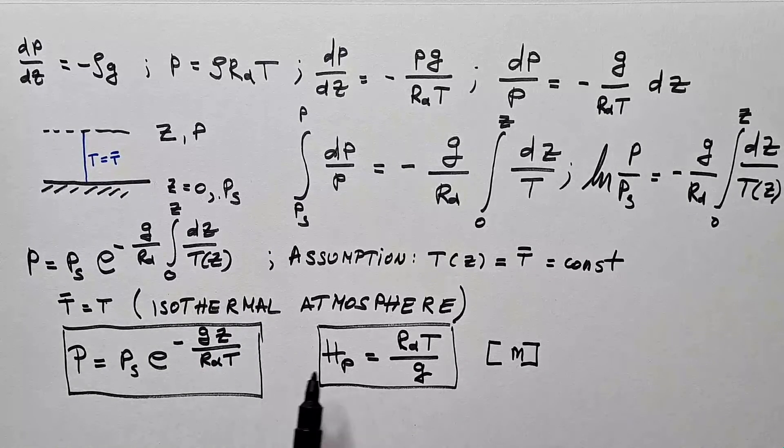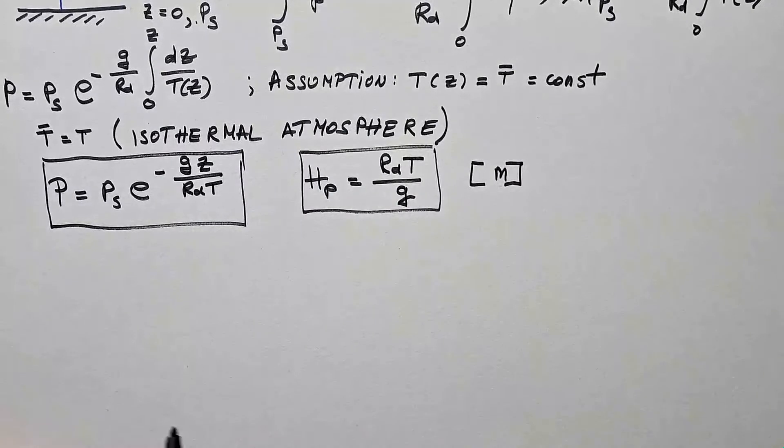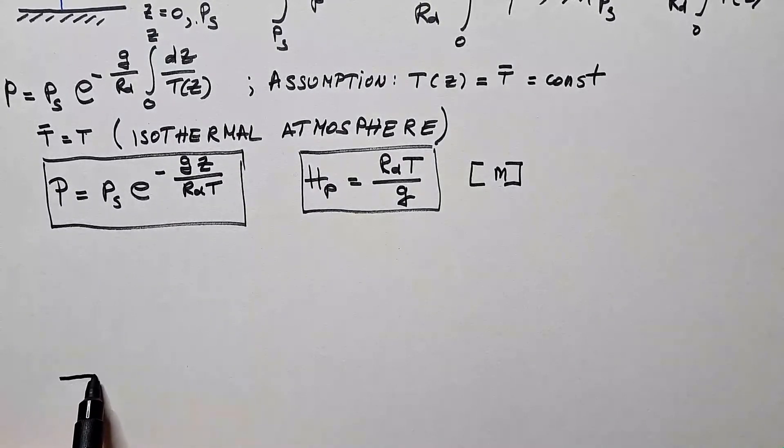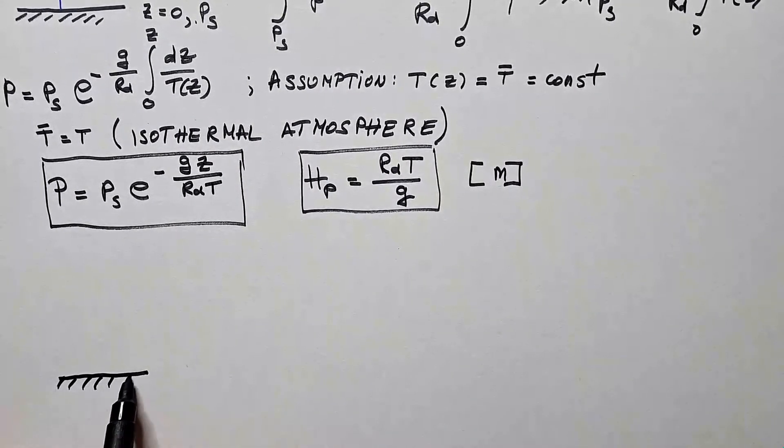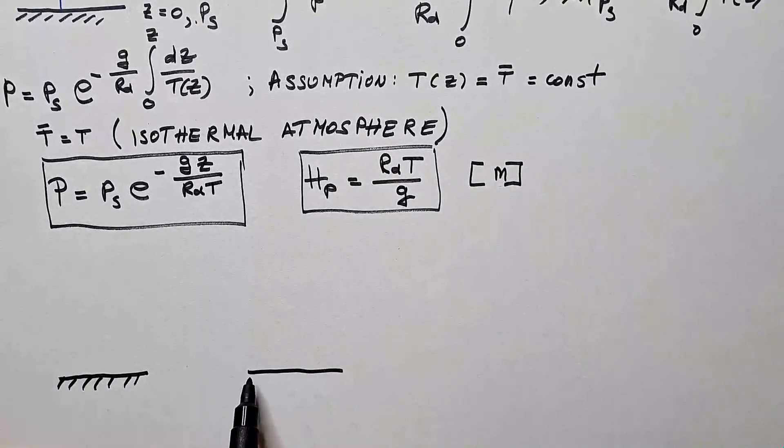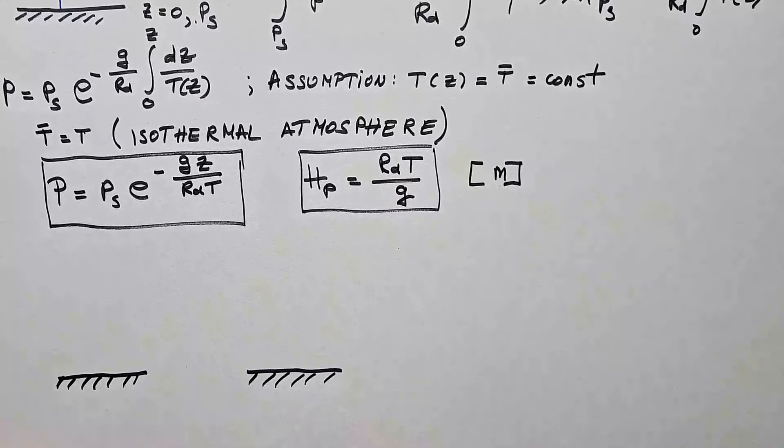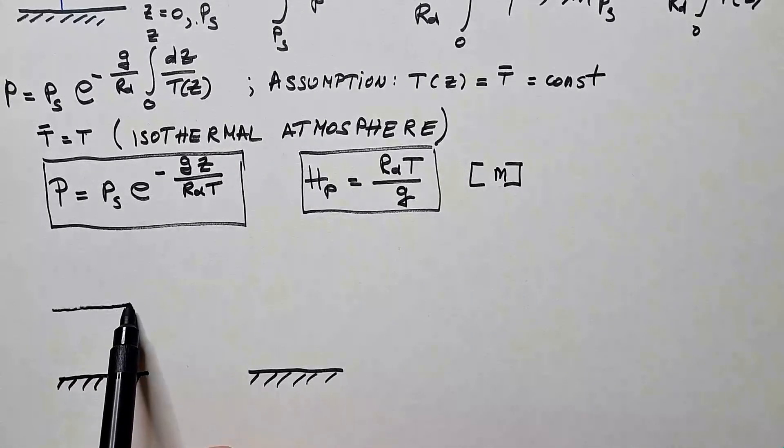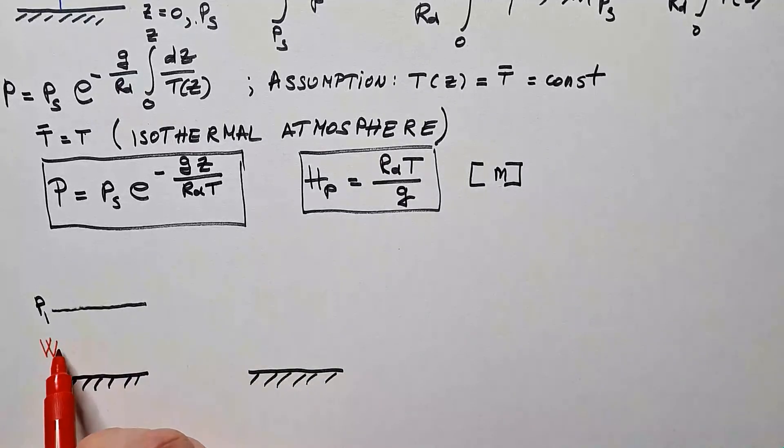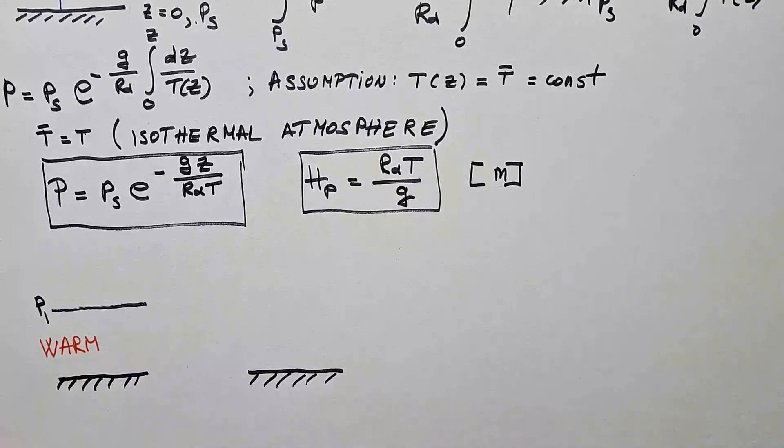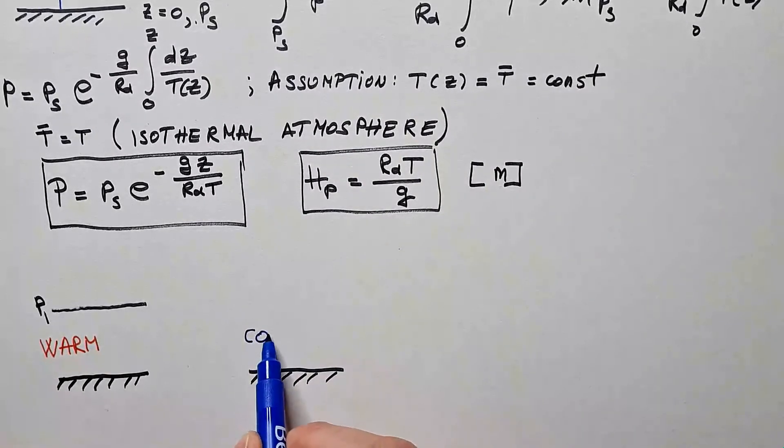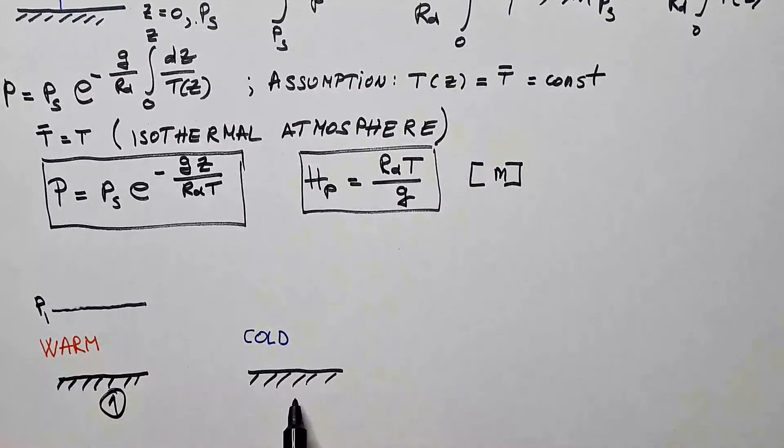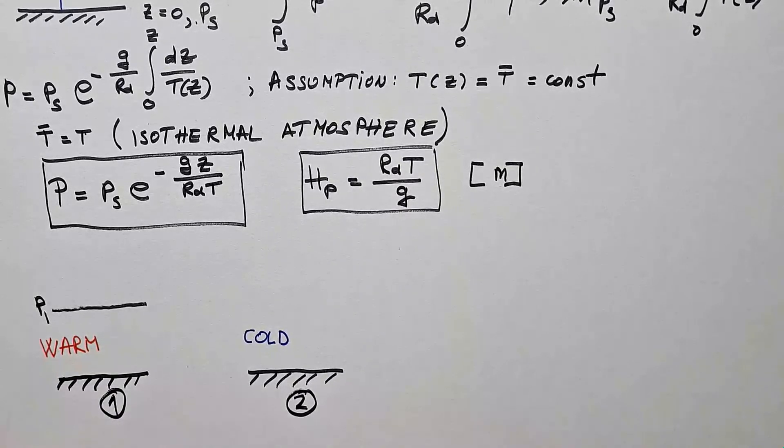Let's see how that follows from this expression. Let's say here I have surface of the earth, and somewhere here I also have surface of the earth. Furthermore, let's say here is some pressure p1. And let's say here air is warm, whereas over here air is cold. This would be location 1, and this would be location 2 above the surface.